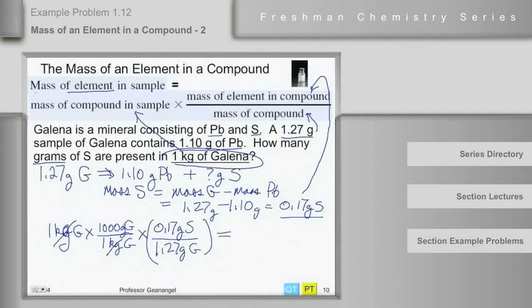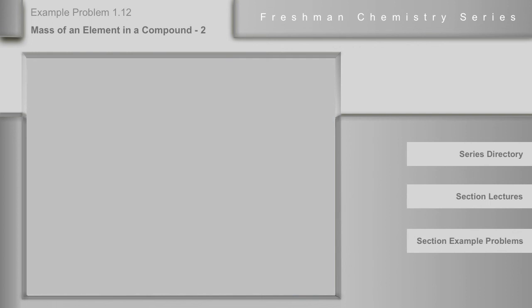So at this point, then grams of galena will go away and our answer will be grams of sulfur. And when I did this, I got 134 grams. Thank you very much.